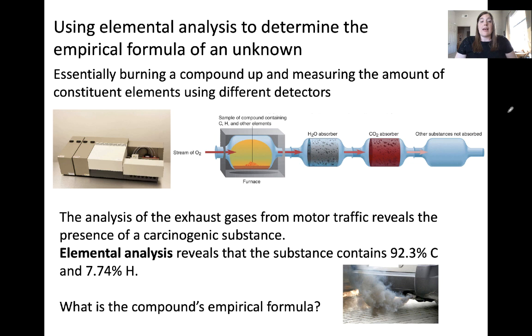Let's look at an example. The analysis of the exhaust gases from motor traffic reveals the presence of a carcinogenic substance. Elemental analysis reveals that the substance contains 92.3% carbon and 7.75% hydrogen. These are elemental analysis data, percent of each element in the compound by mass. What's being asked here is to find the compound's empirical formula.